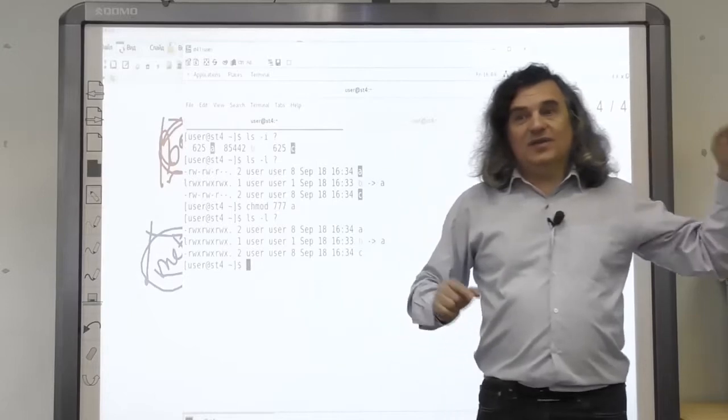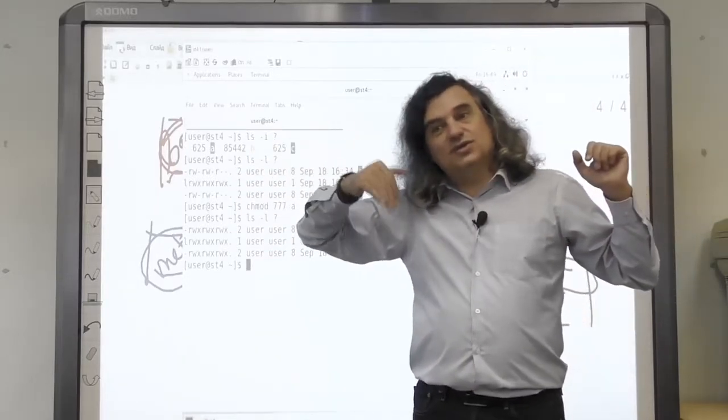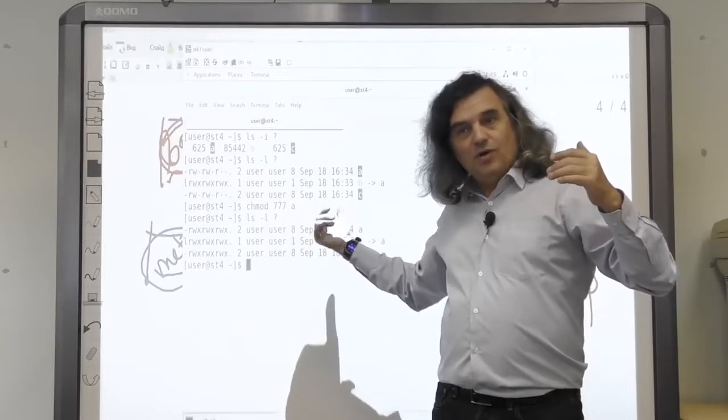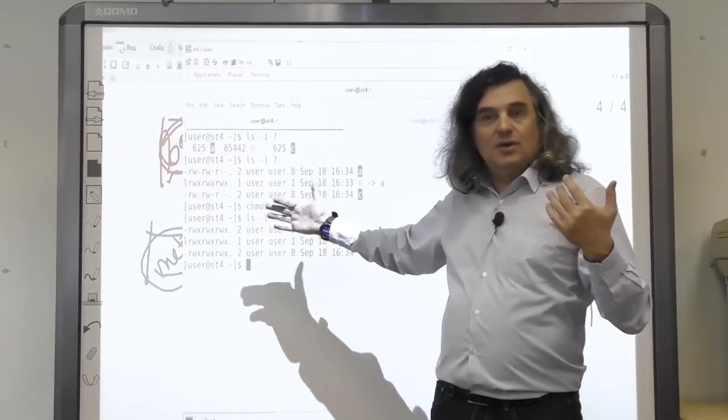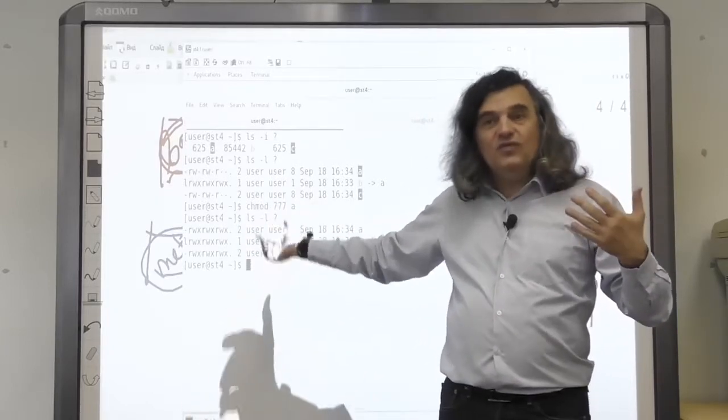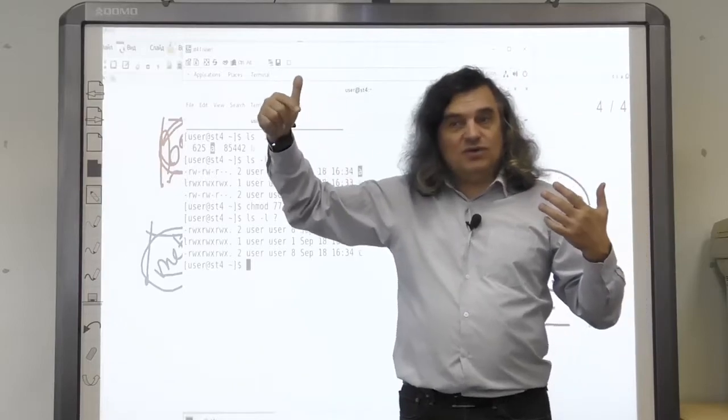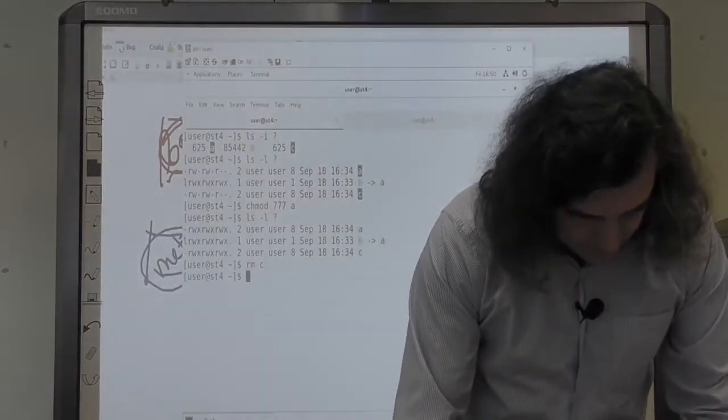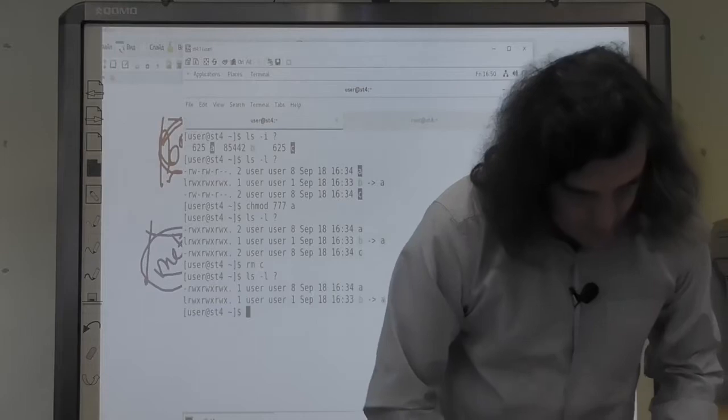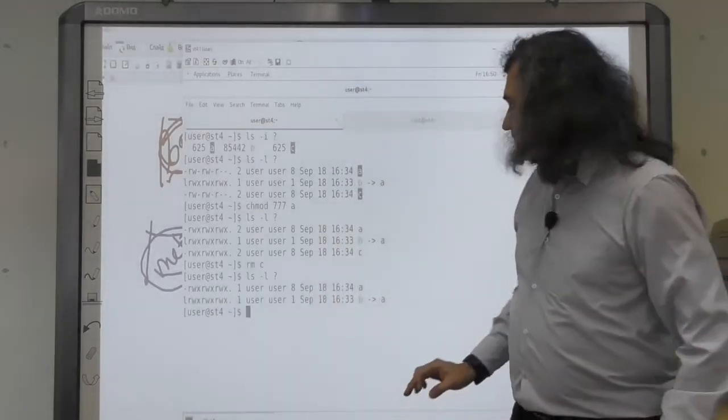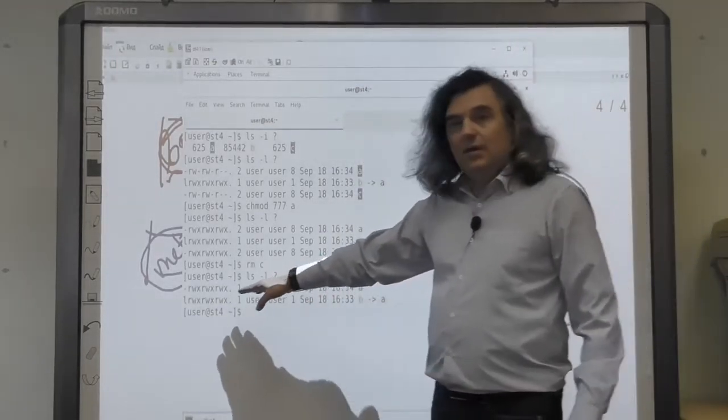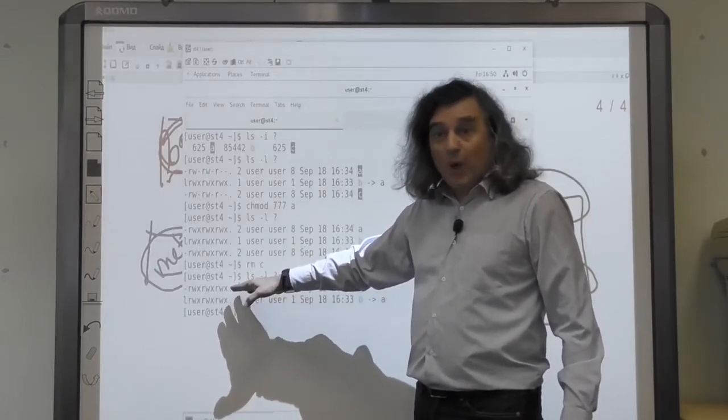Only when the link count reaches zero are the data blocks associated with the file moved to the free blocks list. As we can see, the link counter now is one.